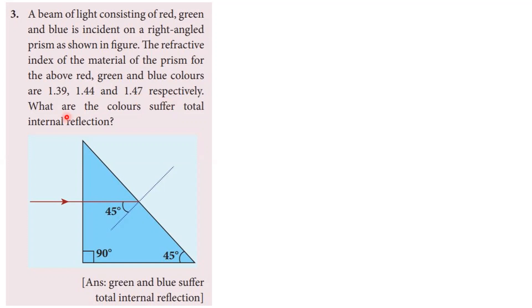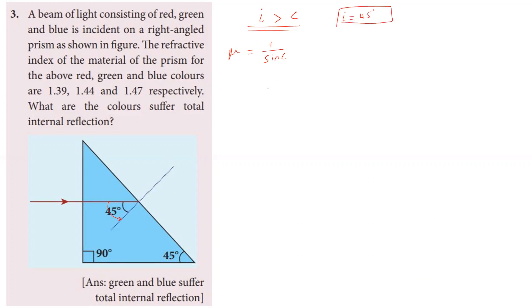The refractive indices are 1.39, 1.44, and 1.47 respectively. The question asks which colors suffer total internal reflection. For total internal reflection, light travels from denser to rarer medium, and the angle of incidence must be greater than the critical angle.